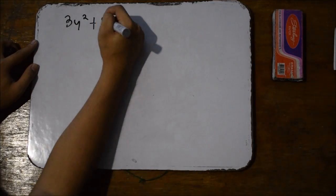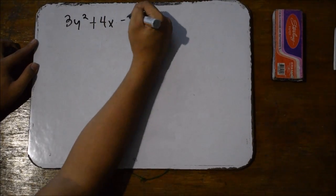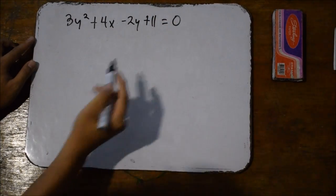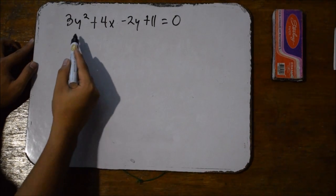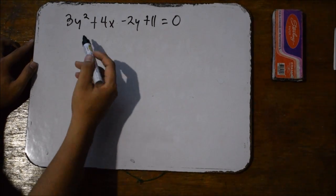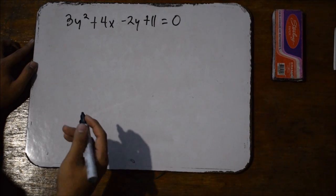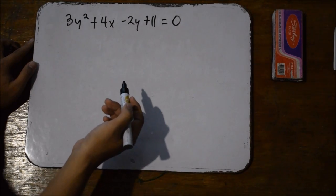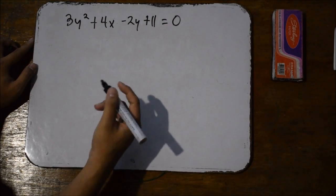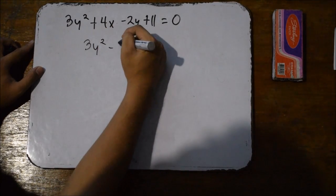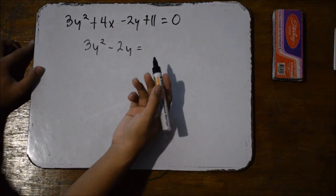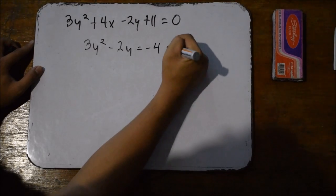Let's have another example. This time we have a parabola in the general form of 3y squared plus 4x minus 2y plus 11 is equal to 0. We would notice that the variable with the highest degree is y, because the parabola could be opening to the left or to the right. Regardless, we still need to separate the variables — we're going to leave the y terms on the left side. So y squared minus 2y is equal to — applying the addition principle of equality — negative 4x minus 11.